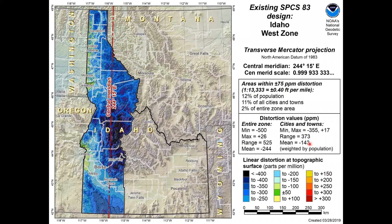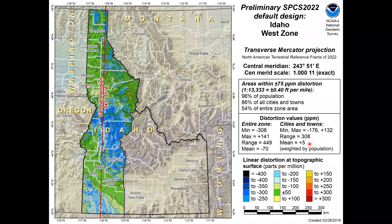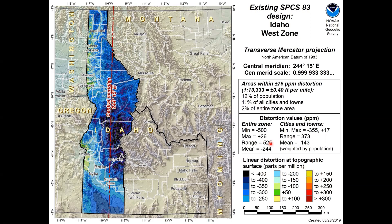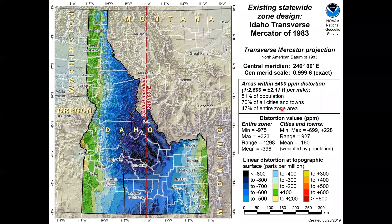Here's what the existing state plane 83 looks like for that zone in Idaho. Notice the central meridian has moved to the east for state plane 83, and you can see the range of distortion has increased. Topography is generally a little bit lower to the west in this zone, which is why moving the projection axis improved the new design. The performance for population and area is really poor under state plane 83, but that's expected — it was designed with respect to the ellipsoid and Idaho's at high elevation.